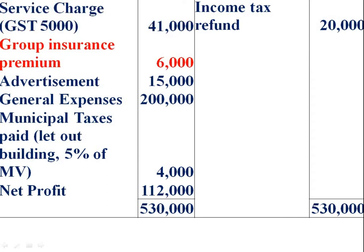Group insurance premium — it is a business expenditure. This group insurance premium relates to employees' salary and is a business expenditure. Advertisement is a business expenditure. General expenses is also a business expenditure.